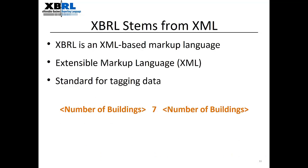How can a data standard help this problem? XBRL is a technology standard used by every public company today for financial statement reporting. It's based on XML, which allows data to be tagged or identified. For example, the number 7 by itself is meaningless, but by using XML we can tell a computer that 7 represents the number of buildings. Tags let the data creator communicate to the data user exactly what the data represents.